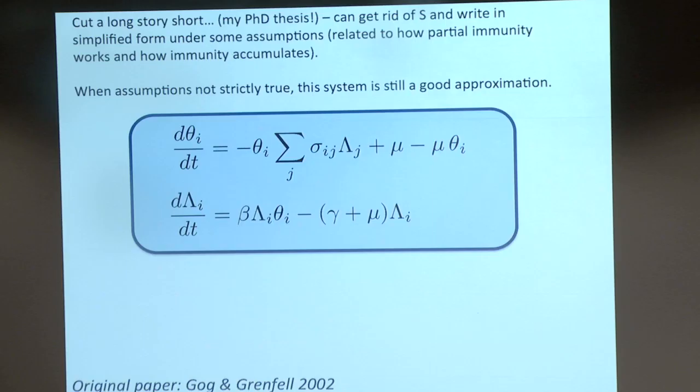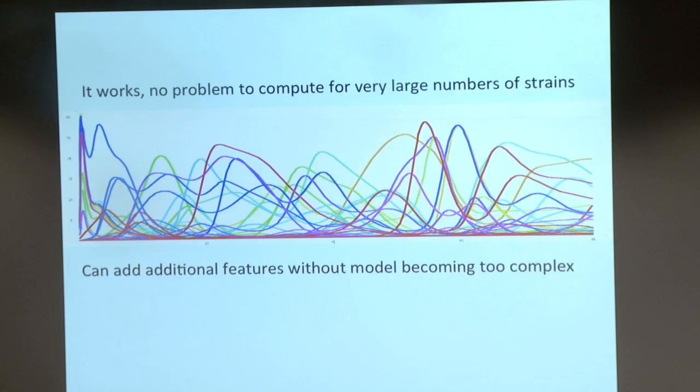The result looks like this: we're just down to thetas and lambdas. We've gone from 2^N — a silly number — down to just 2N. So 100 strains is 200 variables, which I can put in a computer. Good news. Here's 100 strains with random cross-immunity between them — computed on a very old little laptop, no problem. And once you've made the strain bit easy, you can add other complexities on top.